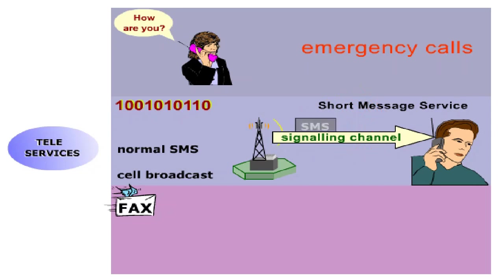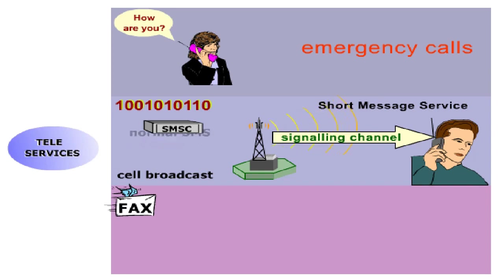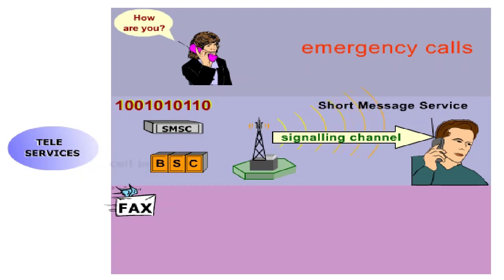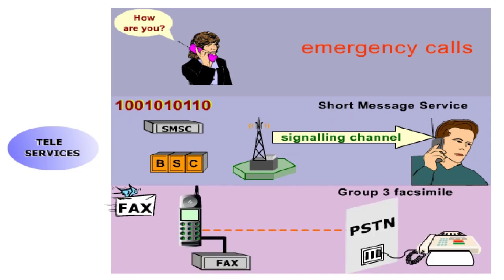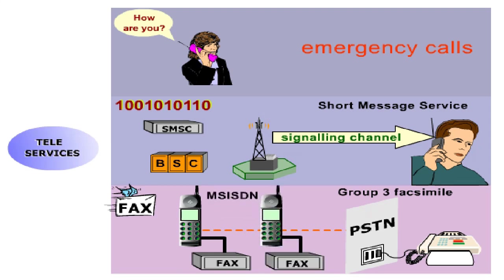Whereas normal short messages are stored temporarily in the short message service center, SMSC, with cell broadcast, they are stored in the base station controller, BSC. The fax services, also referred to as Group 3 facsimile, provide automatic fax service between a mobile fax and a fax machine within a PSTN, or between two mobile fax terminals, each with its own MSISDN, at a maximum speed of 9.6 kilobits per second.